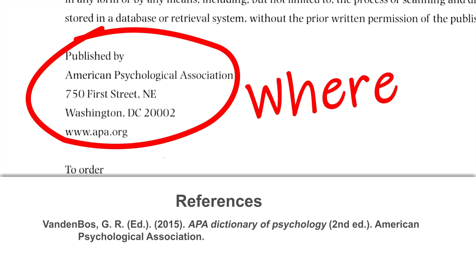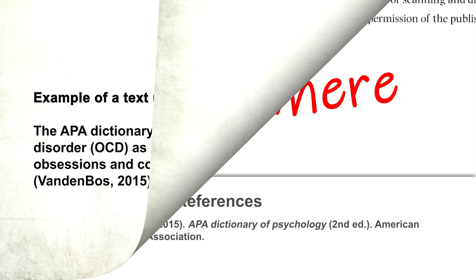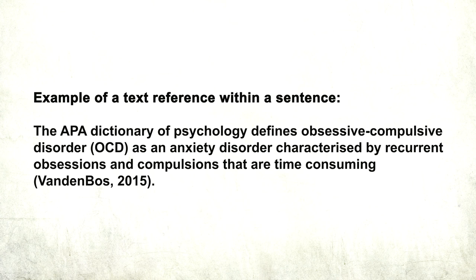This is the second edition of the dictionary, and the publisher is the American Psychological Association. According to the seventh edition of the APA Publication Manual, you no longer need to include the publisher location in the reference entry. And there you have it, the entry in the reference list, with the help of the four W's: Vandenbos, G.R. — the editor — 2015, APA Dictionary of Psychology, second edition, American Psychological Association.